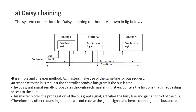The first master will pass the request to the second master. Once a master gets the bus, it will release it. In the same way, the second master can gain access. This is the main advantage. But there are disadvantages: if bus master 2 and bus masters 5 and 6 all send requests simultaneously, bus master 2 will get the bus first. If bus master 2 generates another request, it will get the bus again, meaning other masters may not be able to access the bus.